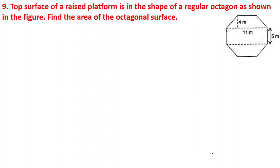The top surface of a raised platform is in the shape of a regular octagon. Find the area of the octagonal surface. The octagon has eight equal sides of 5 centimeters each. Divide the octagon into three parts as shown: two trapeziums whose parallel sides are 11 cm and 5 cm, and perpendicular height is 4 cm, plus one rectangle whose length is 11 cm and breadth is 5 cm.